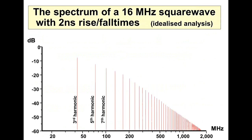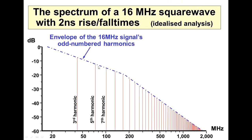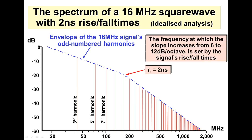If we draw the spectrum of a 16 MHz square wave with 2 nanosecond rise and fall times — quite an old-fashioned sort of idea, like HCMOS from 1985 switching at 16 MHz — we see the odd harmonics: the third, the fifth, the seventh, and so on. No even harmonics, because it's a perfect square wave. If we draw the envelope, we can see it falls off at 6 dBs per octave, or 20 dBs per decade, and then beyond a certain point, it falls off at twice that rate. That breakpoint is given by the rise and fall time, and for 2 nanoseconds it gives us a breakpoint at about 170 MHz.